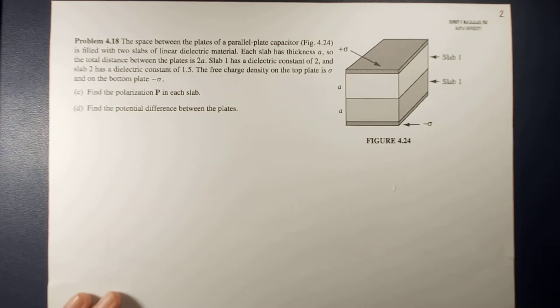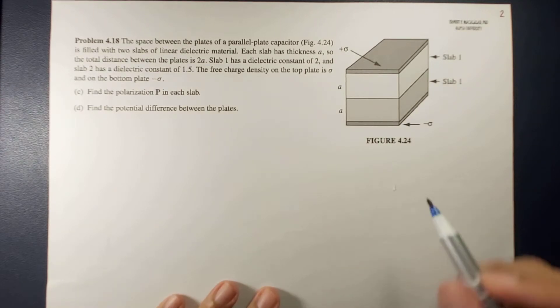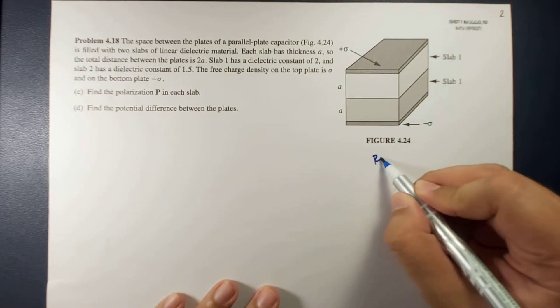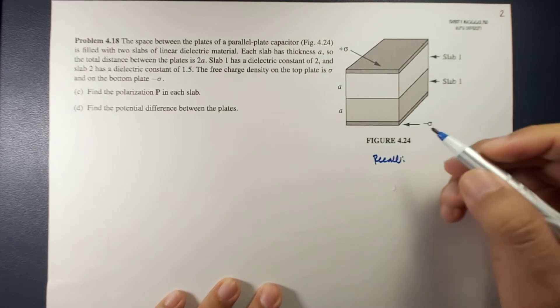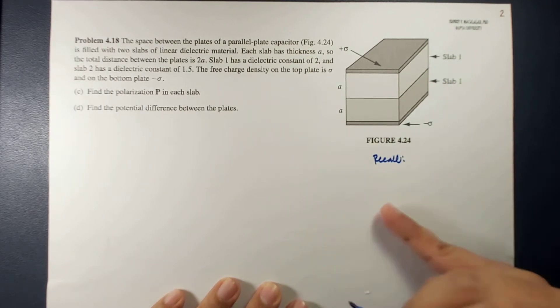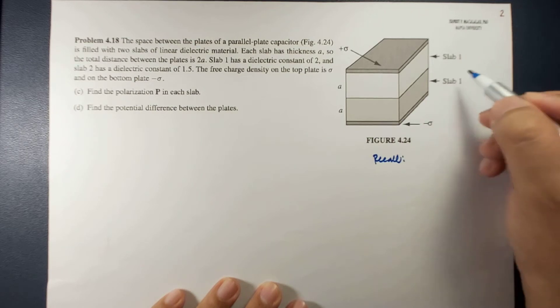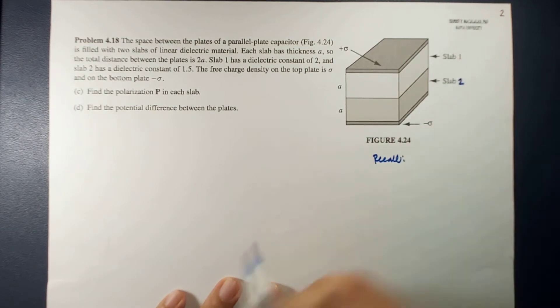Hi guys, so today we're going to continue our solution to problem 4.18. This time we're going to find the polarization in each slab and we're going to find the potential difference between the plates. Let's recall that we have two slabs, slab 1 and slab 2, with dielectric constants 2 and 1.5.